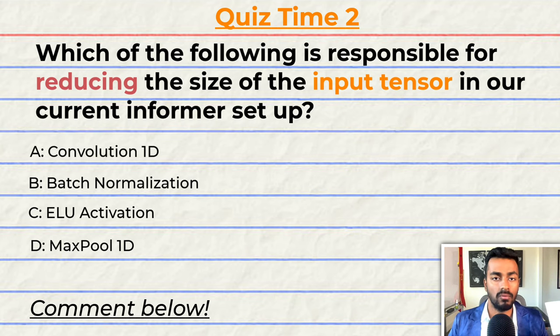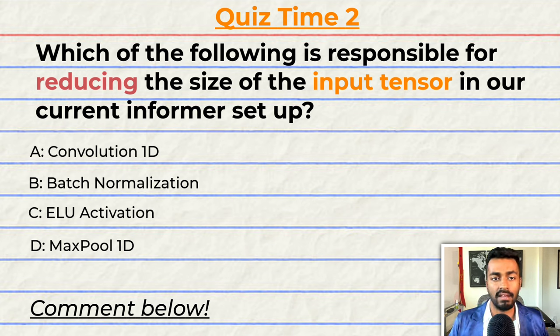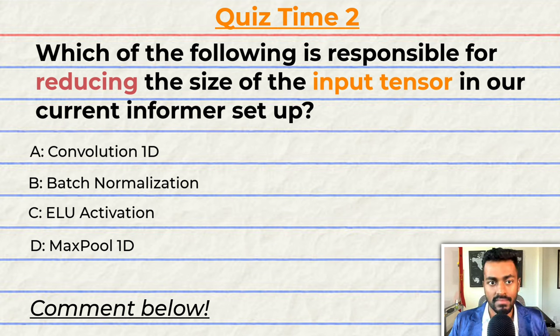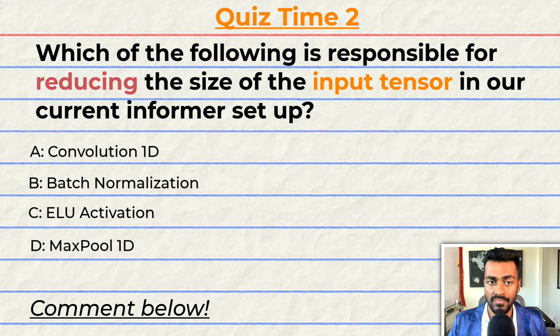Quiz time! Which of the following operations is responsible for reducing the size of the input tensor in our current informer setup? A: the Convolution 1D. B: the batch normalization. C: the ELU activation. Or D: max pooling 1D. Comment your answer down below and let's have a discussion. That's going to do it for quiz time and pass 2 of this explanation, but keep paying attention because I will be back to quiz you.